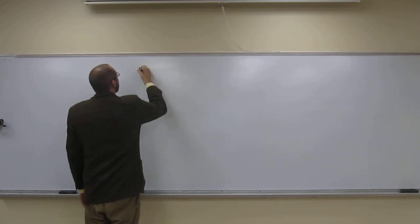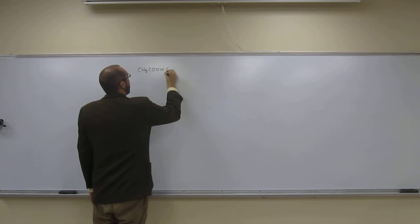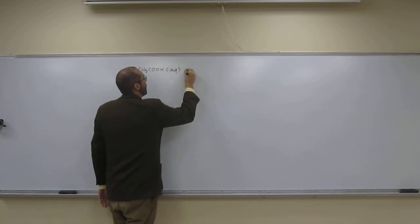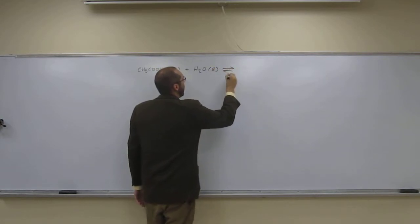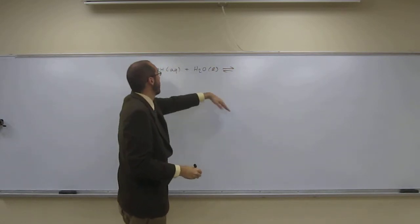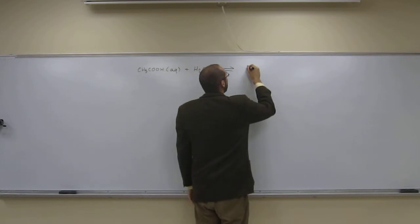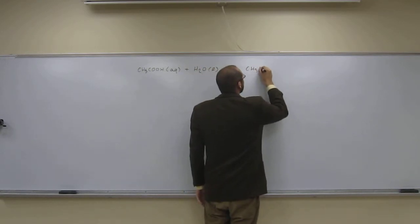So acetic acid is CH3COOH, and a solution of it, that means we're dropping it in some water, and that's going to react with the weak acid, acetic acid, to make the conjugate base of acetic acid.